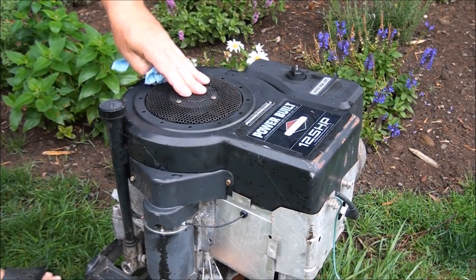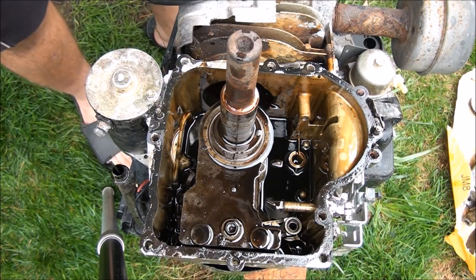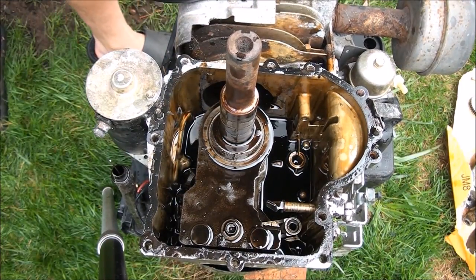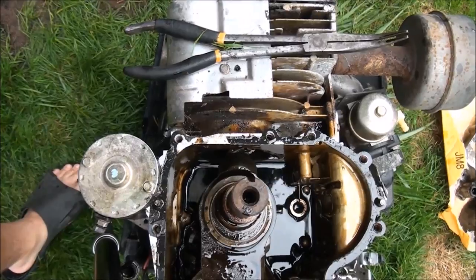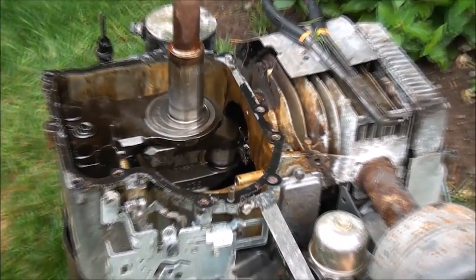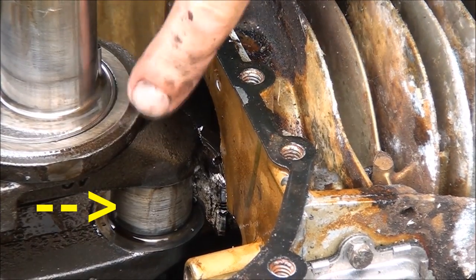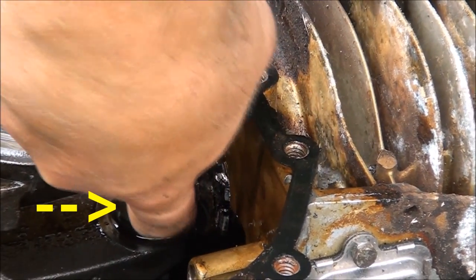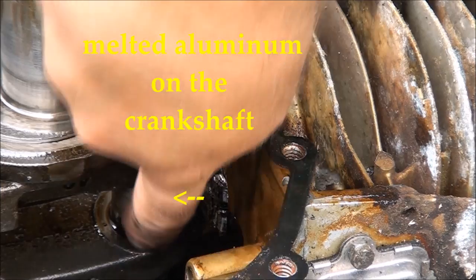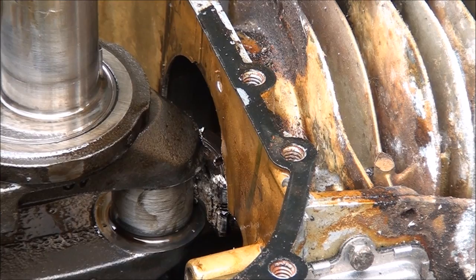Oh geez, yeah we did. Yikes, that rod broke. See it up in there? You can see the broken rod there. Unfortunately where the rod rides on the crankshaft here, I can actually feel grooves in it. That's not good. That's supposed to be glossy smooth with no marks. I think this crankshaft is probably ruined too. Not sure if I'll be able to clean that up.